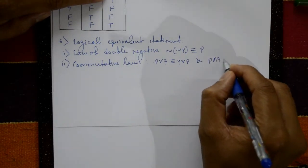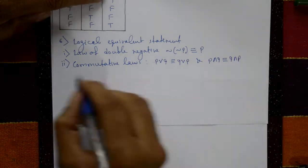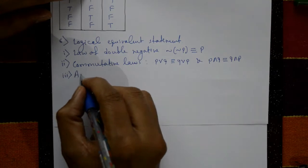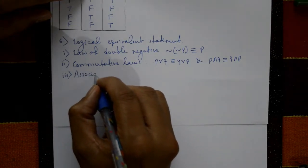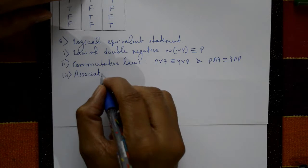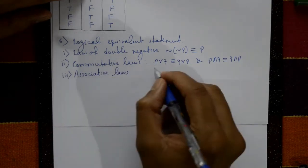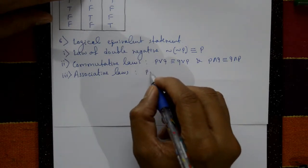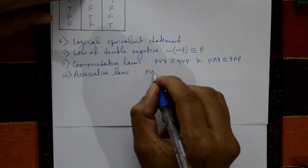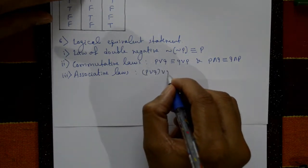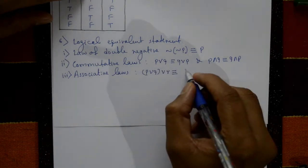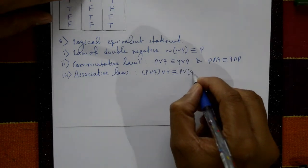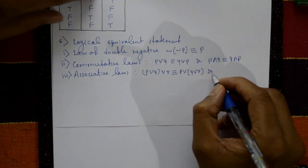Commutative law also: P conjunction Q is equivalent to Q conjunction P. Third one: associative law — using three variables P, Q, R. P disjunction (Q disjunction R) is equivalent to (P disjunction Q) disjunction R.